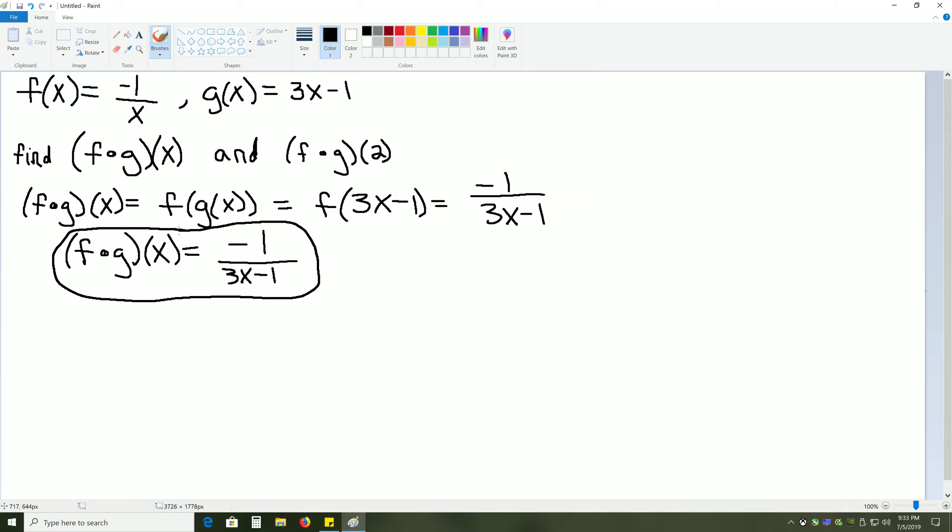But with that, we've now changed the domain of the problem. f of x and g of x do not necessarily have the same domain as f of g of x. This is an entirely new function. And the way that you find the domain of this function is to take your inner function, g of x, and find any values that would cause division by 0 or a negative inside of a square root.